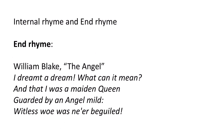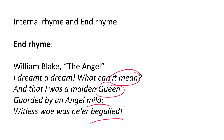An end rhyme is what we usually look at when we read poetry — it's what we're used to. Here's an example from William Blake's 'The Angel': 'I dreamt a dream! What can it mean? And that I was a maiden queen, guarded by an angel mild. Witless woe was ne'er beguiled.' 'Mean' and 'queen' rhyme, and 'mild' and 'beguiled' rhyme — an example of an end rhyme, in this case AABB.